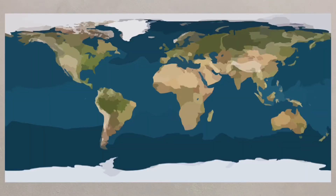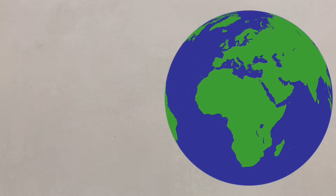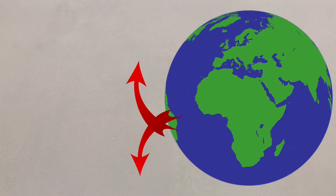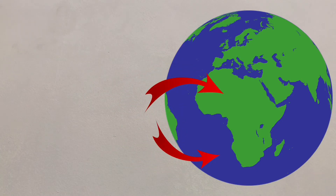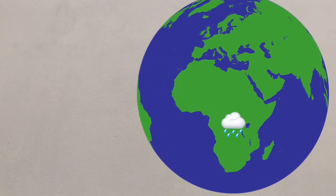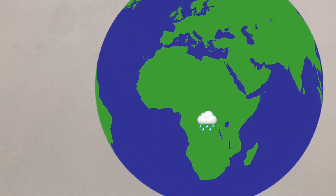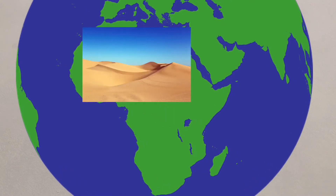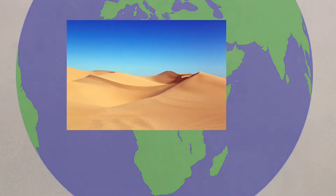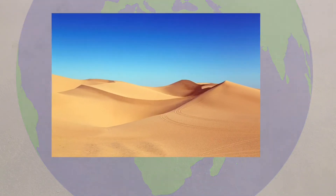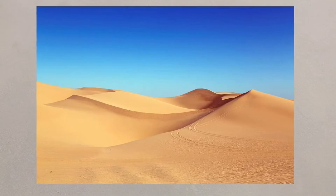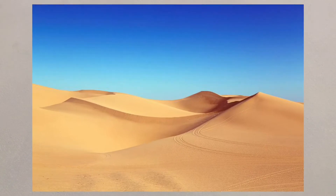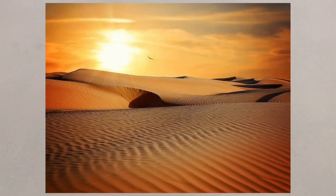Hot deserts are located around 30 degrees north and south of the equator. Air that rose at the equator descends at these latitudes. The air has released its moisture at the tropical rainforests, so it's very dry. This creates high pressure and clear skies, allowing strong sunlight to create scorching temperatures.